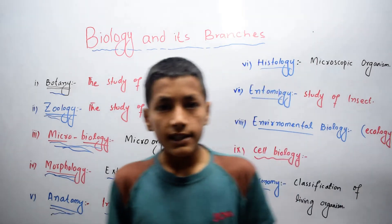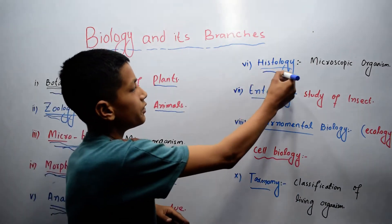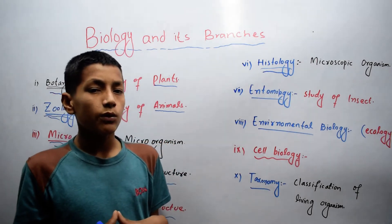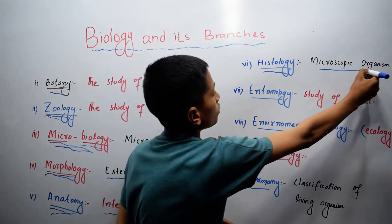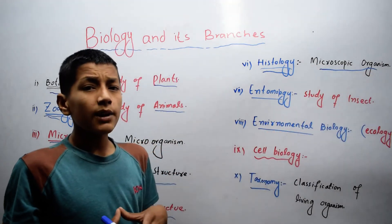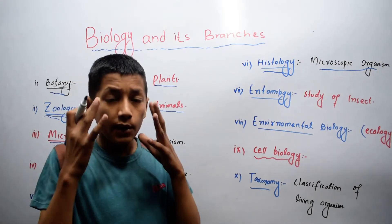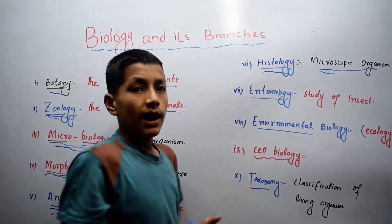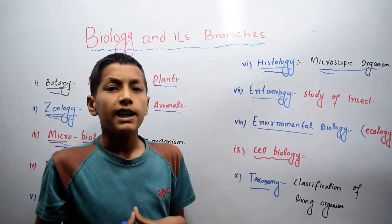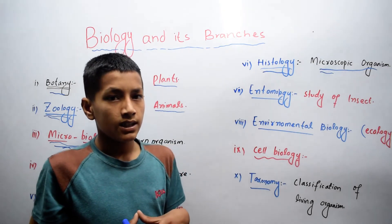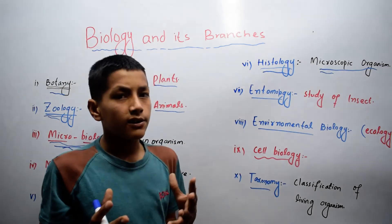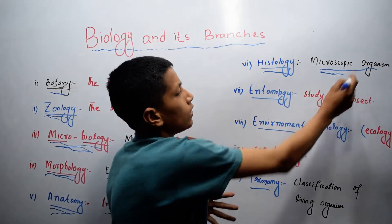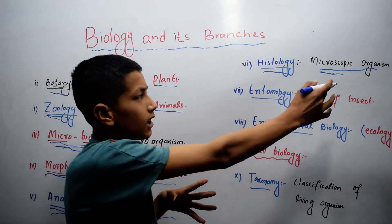Let's come to the next branch of biology, which is histology. Histology is the branch of biology in which we deal with the study of microscopic organisms — organisms that we cannot see with our naked eyes. We use a microscope, which is an instrument used to see small objects, for example bacteria. So the study of microscopic organisms is called histology.